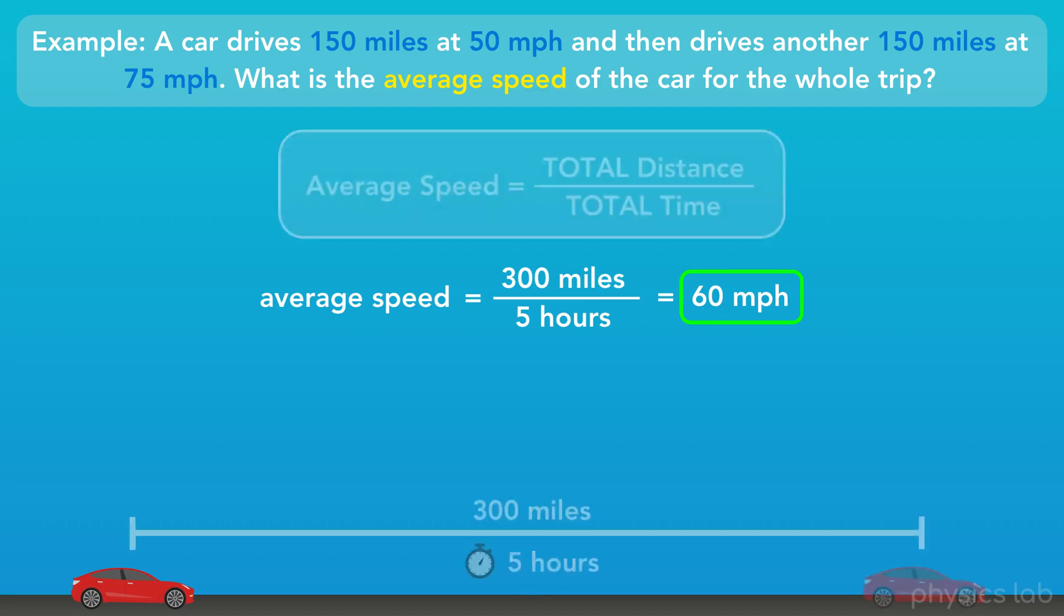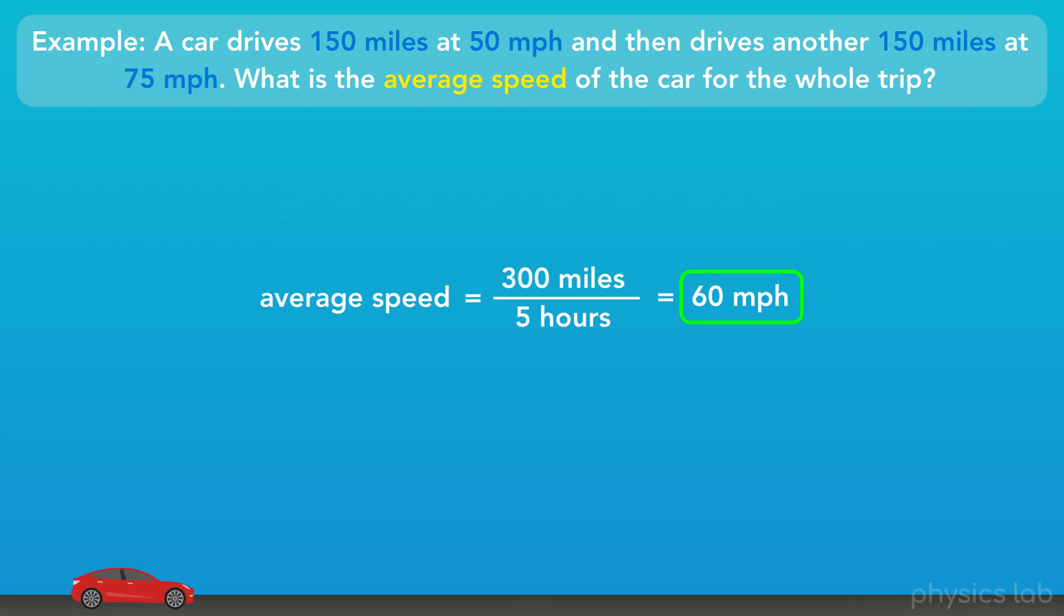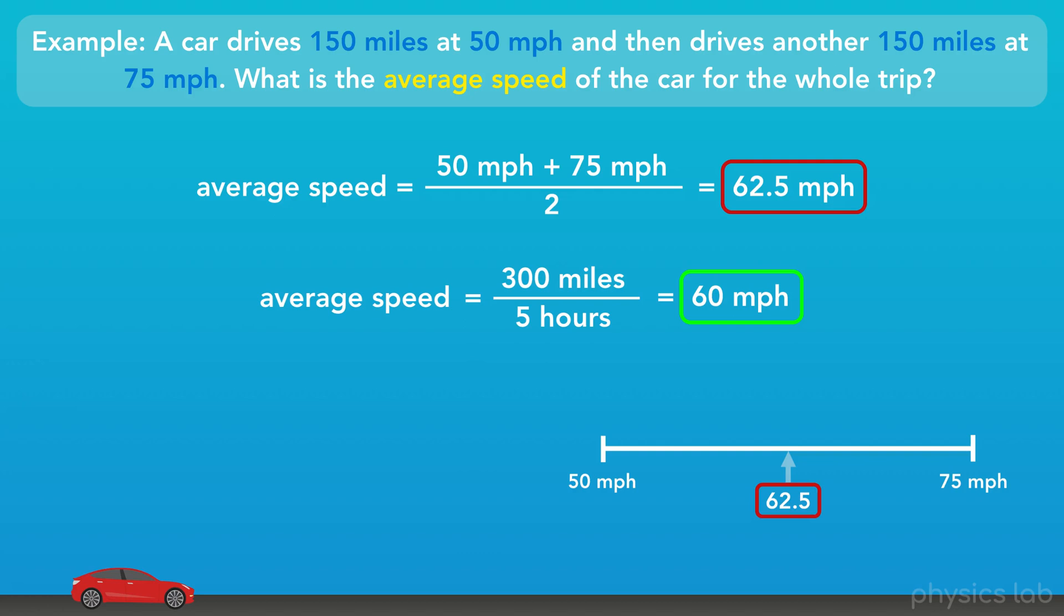Why is this answer correct, and why is it different than the one we got before? This first method of finding average speed feels right, doesn't it? 62.5 is halfway between 50 and 75, which is how we're used to finding the average of two numbers. But, the correct average speed, 60, is less than that. It's closer to 50 than it is to 75. So, why is that?